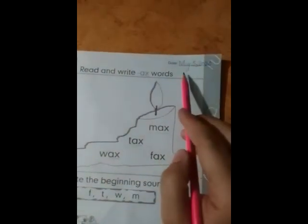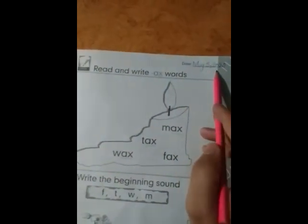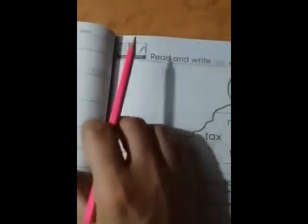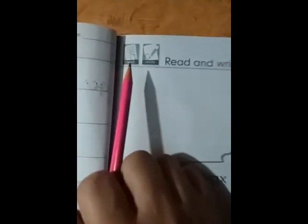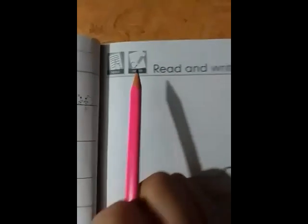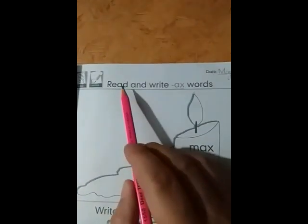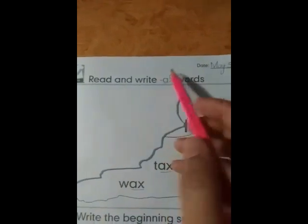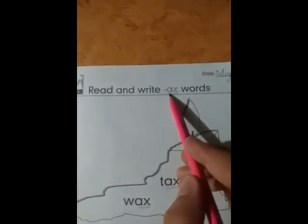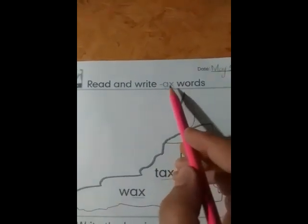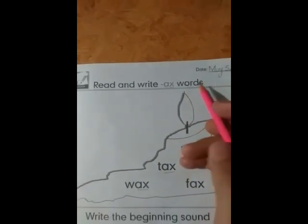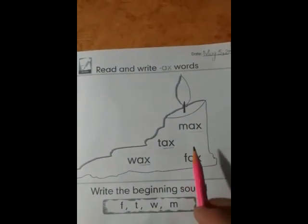Open the page number 15. Firstly we mention the date on this page May 5, 2020 and we will read the icon. The first icon is read and the second is write. The first question is read and write ax words. The first sound is A and the second is X words.